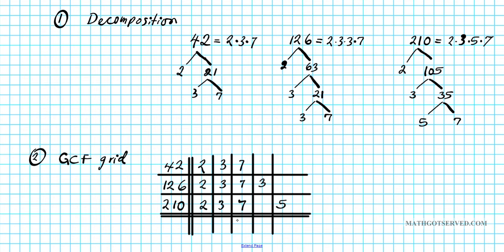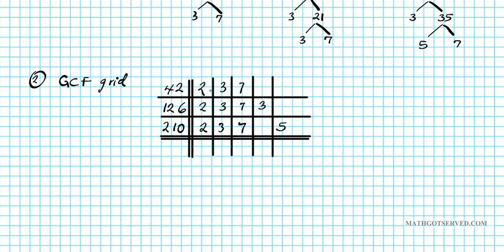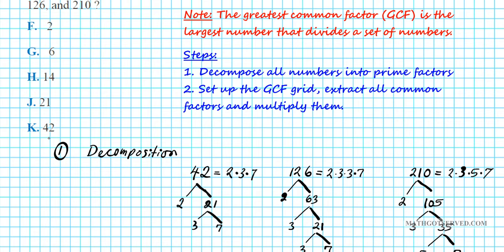The GCF consists of columns that are fully populated — columns with a number from each of the three numbers. The 2-column, the first 3-column, and the 7-column are all fully populated. So the common factors are 2, 3, and 7. Multiply them: 2 times 3 times 7 equals 42. Our answer is option letter K.